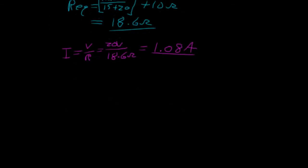Current divider rule is this here. I1 equals I times R2 divided by R1 plus R2.